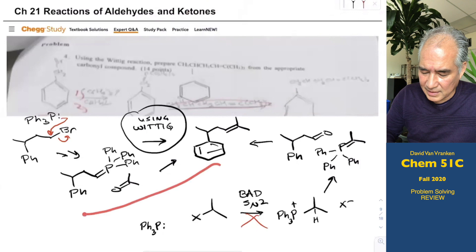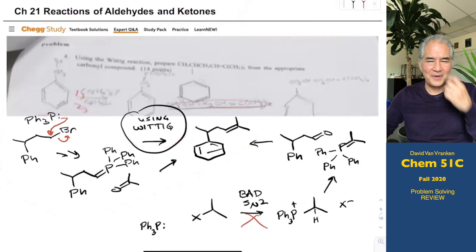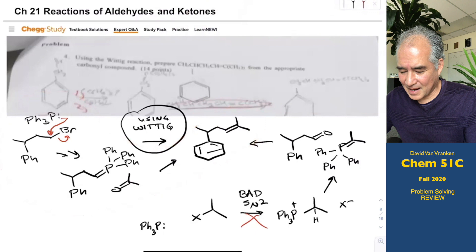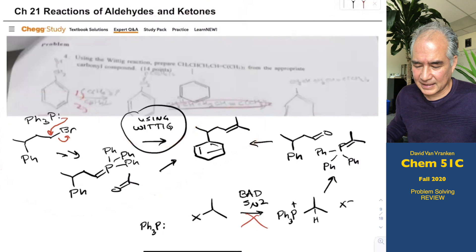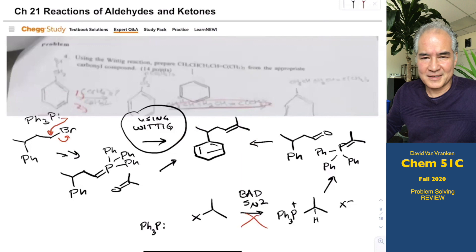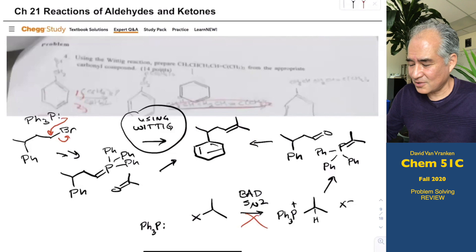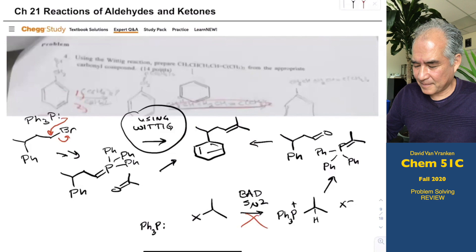How would you make that? They don't tell you how far backwards you have to go with your starting materials. This is a semi-deep question we talked about in class: you can't make every possible Wittig reagent — some are hard to make because you have to use SN2 reactions, which don't always work well.